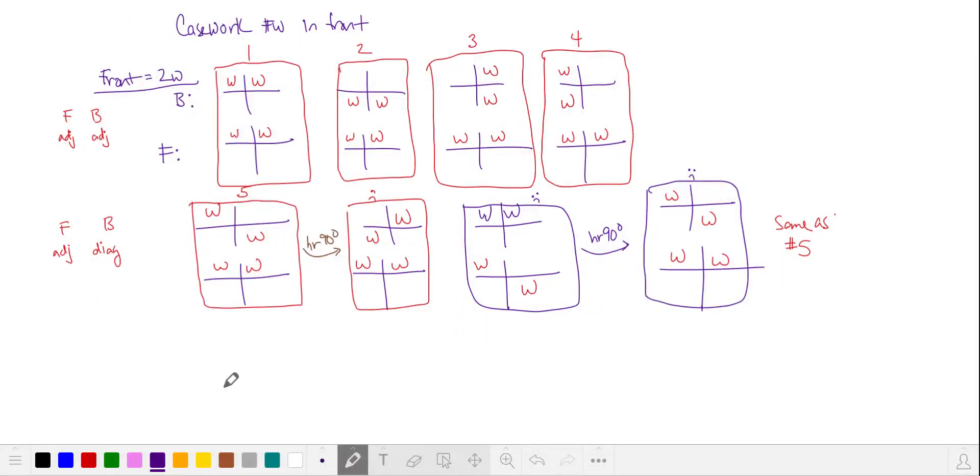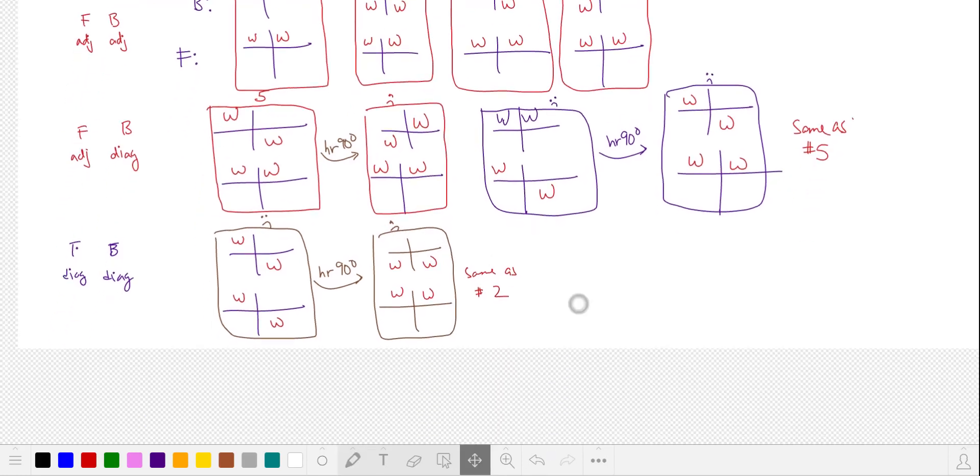These are not new constructions. And now we can do maybe the front is diagonal and the back also has our white cubes oriented diagonally. So we could have them going in the same direction like this. Let's do a horizontal rotation of 90 degrees and see if that gets us one of our existing constructions here. Yep. Look at this. This is the same as what we have. This is the same as orientation number two as equivalent. And I'll put smiley face or unhappy faces because they are not new constructions.